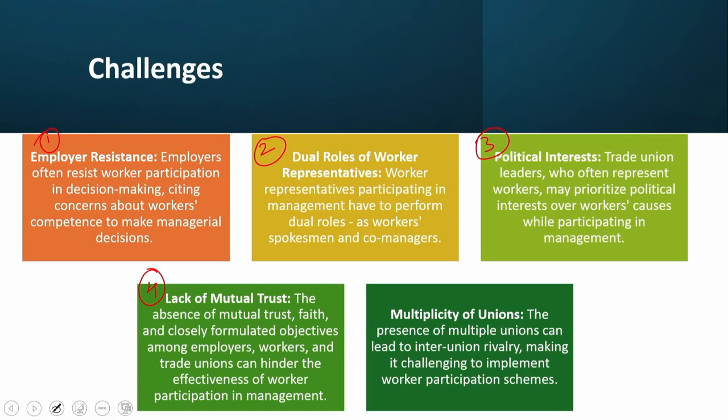The absence of mutual trust and faith and closely formulated objectives among employers, workers, and trade unions can hinder the effectiveness of worker participation management. The presence of multiple unions can lead to inter-union rivalry, making it challenging to implement worker participation schemes. Workers may also lack proper knowledge about the scheme, which can serve as a stumbling block. The bill itself had constraints such as the need for a secret ballot — though an initiation of industrial democracy — which could be very challenging to implement.